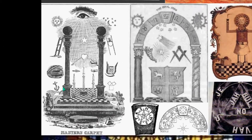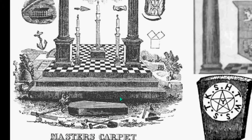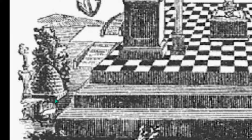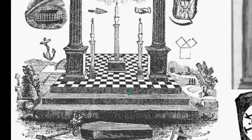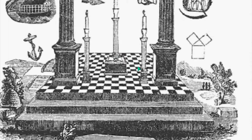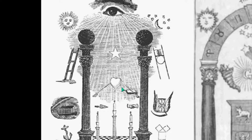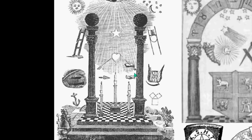A Freemason's tracing board — the Master's carpet — is how they teach their initiates. You can see that coffin, which you also saw in Aleister Crowley's Madame Talbot tribute. There is a beehive, representing industry — they like being the elite with everyone else as workers. You have the checkerboard floor, three pillars representing wisdom and virtues, and the twin Hercules pillars. You also see all the emblems including the star, sun, and moon, and the Eye of Lucifer at the top.